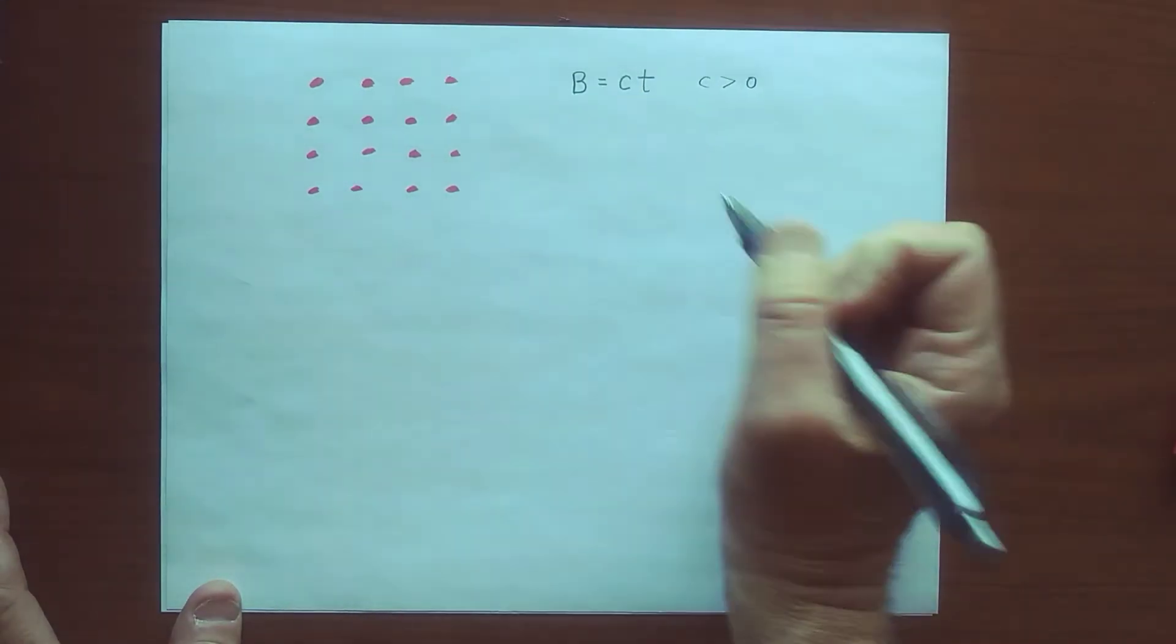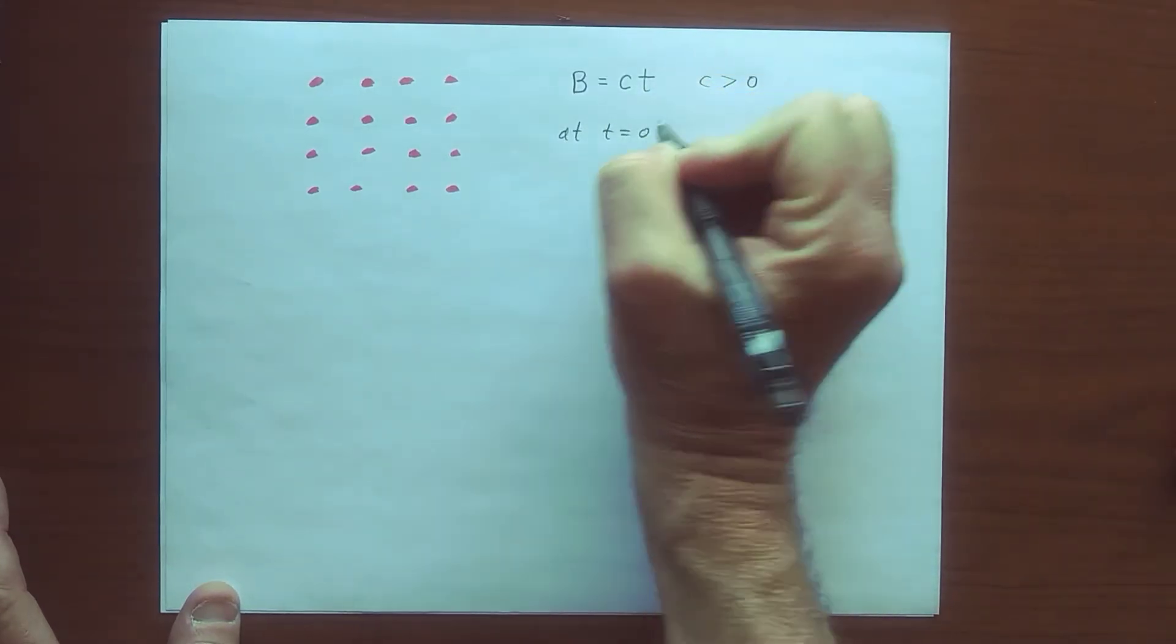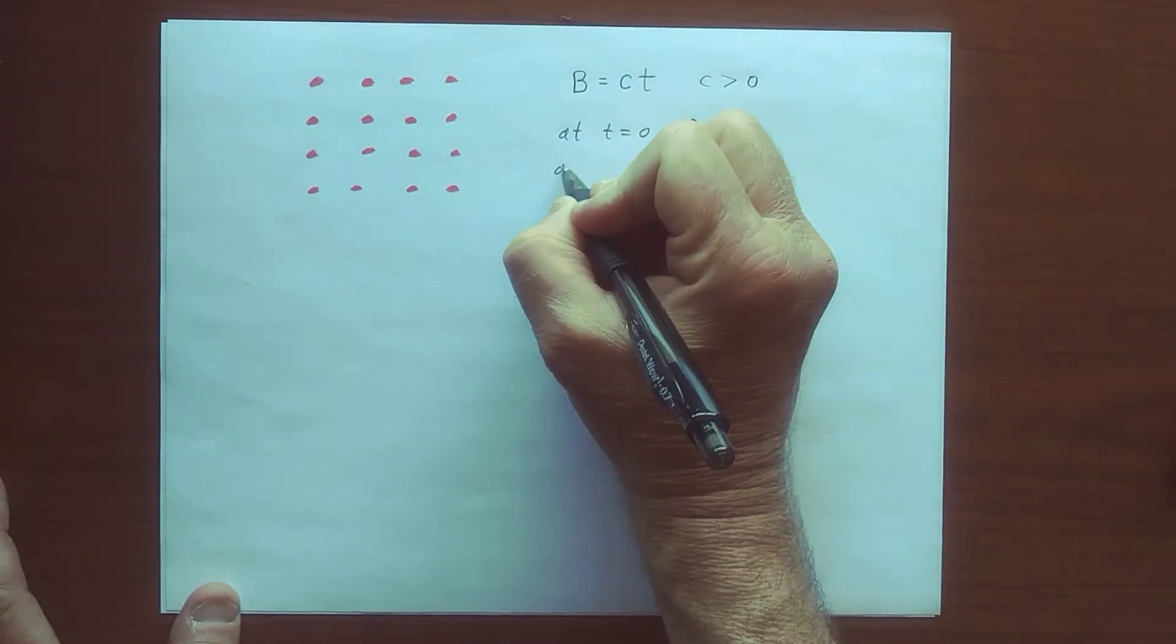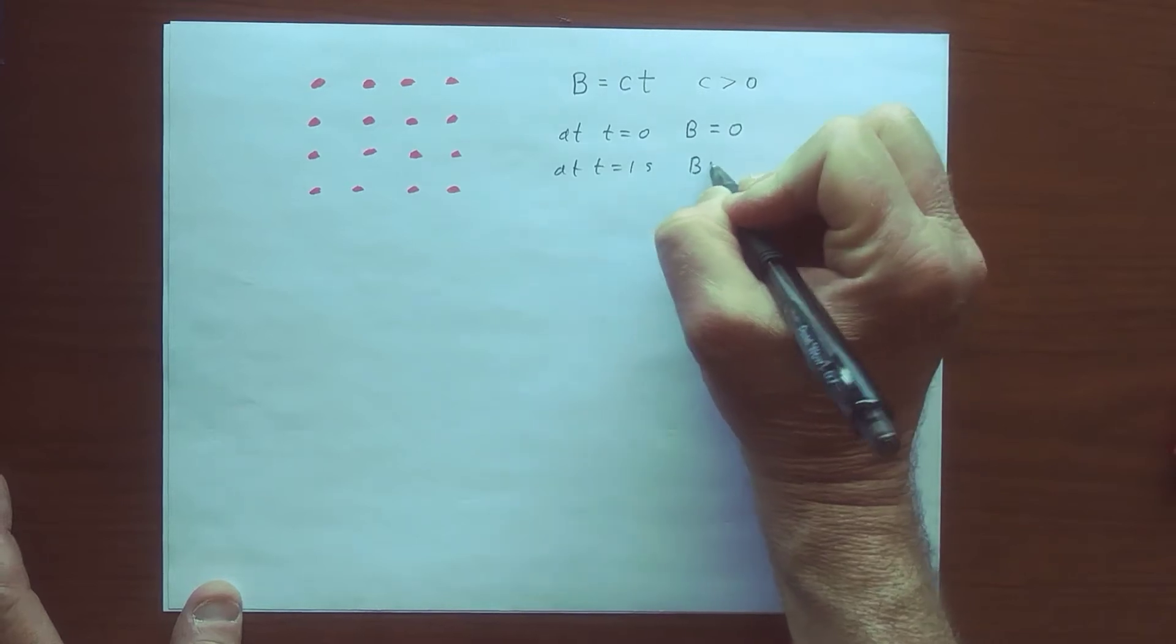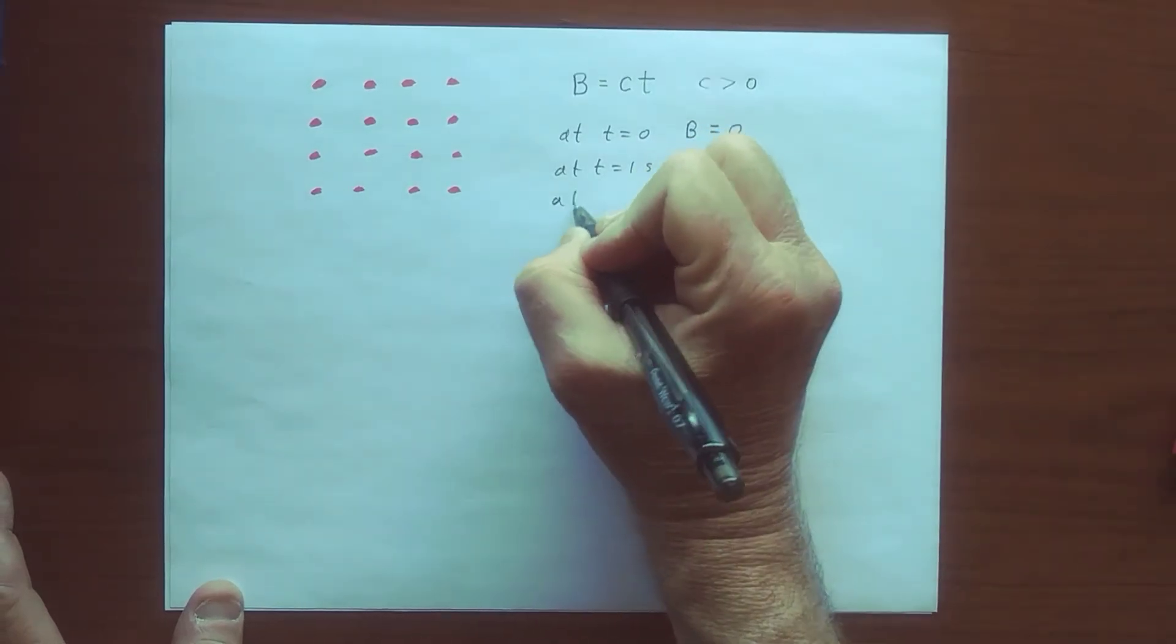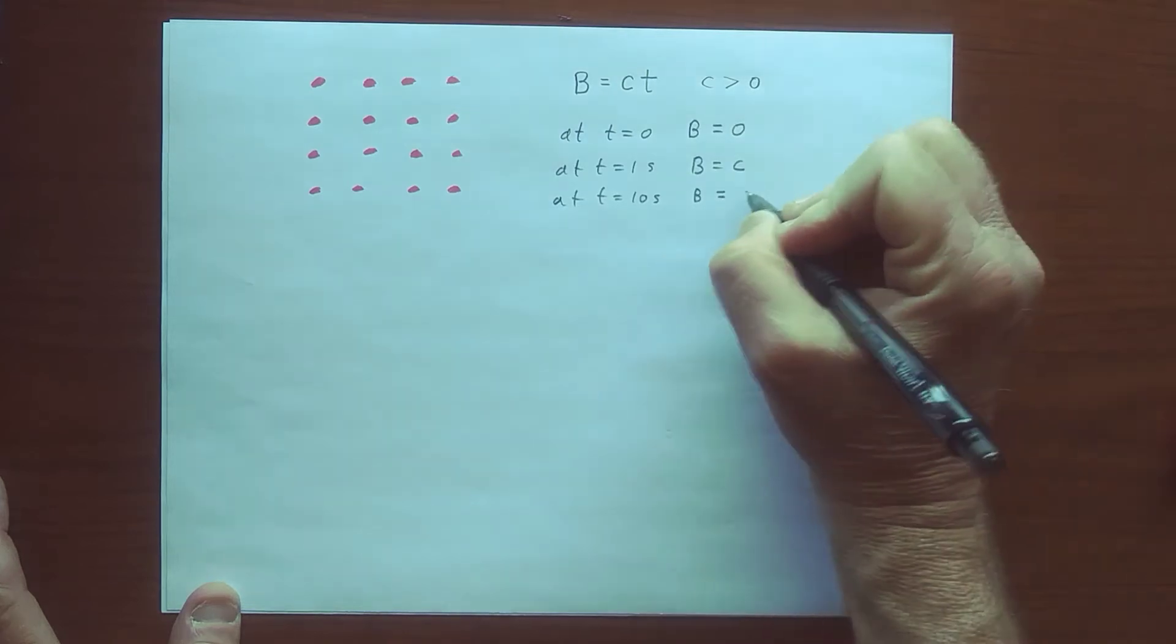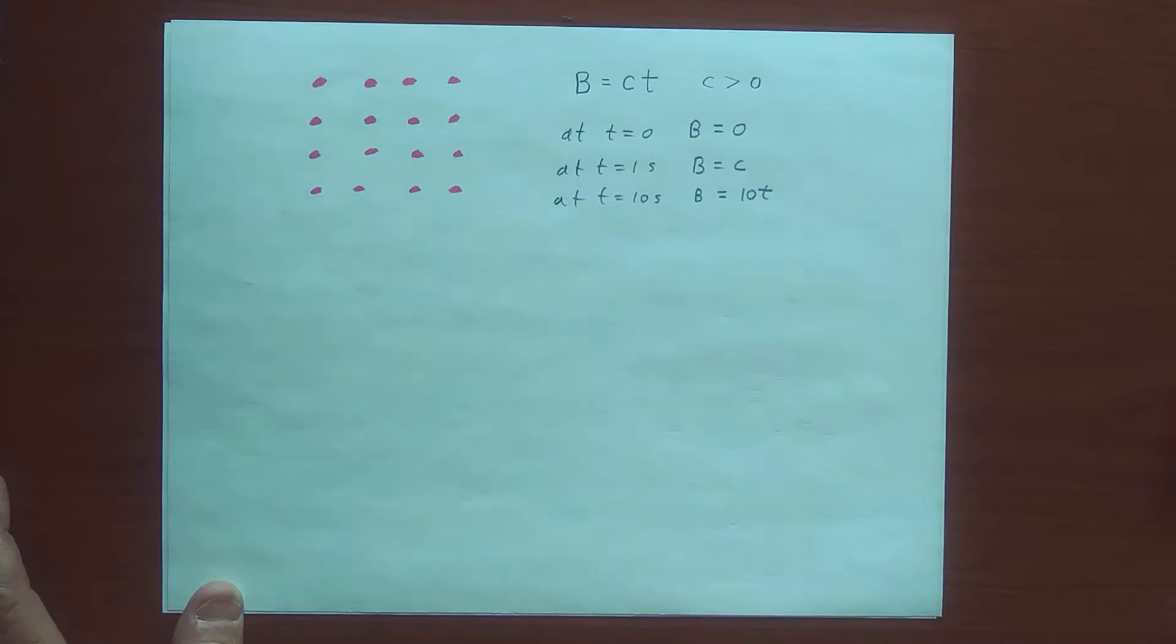At T equals 0, notice that B is equal to 0. At T equals 1 second, B is equal to C. At T equals 10 seconds, B is equal to 10C, and so on. So the magnetic field is linearly increasing in time.